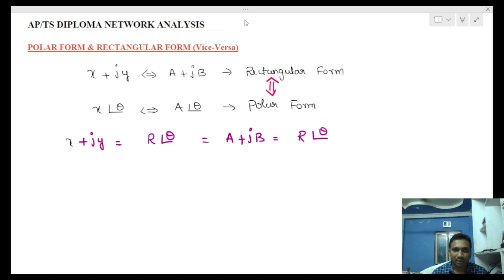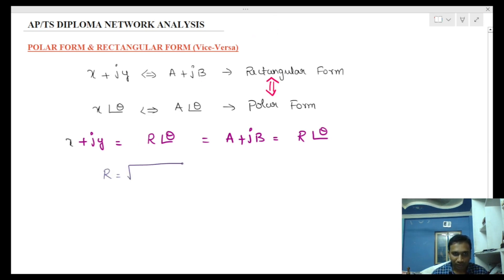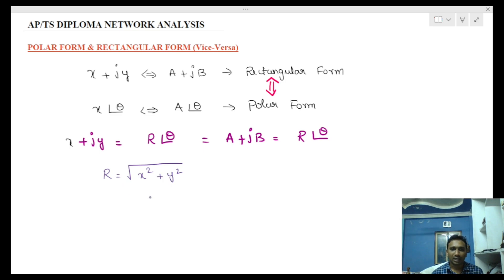So we have to write the representation. R can be found using the formula: R equals square root of x-squared plus y-squared. That is the magnitude formula for converting to polar form.